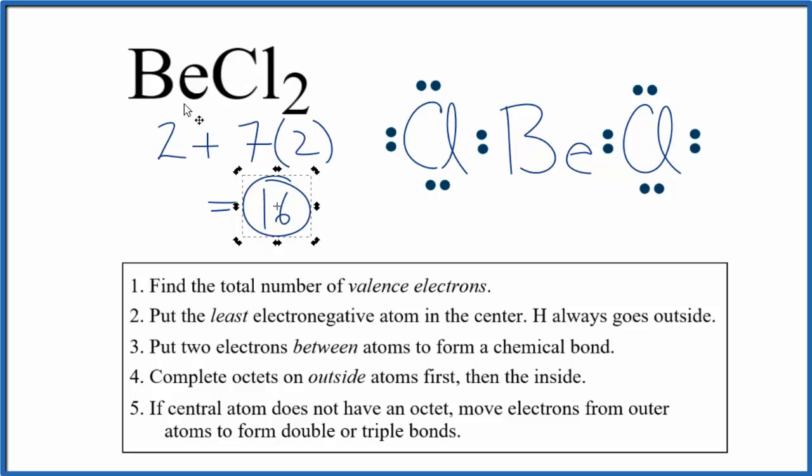That makes this the Lewis structure for BeCl2. If you calculated the formal charges, you'd find that they would be zero on each element. So that supports the idea that this is the best Lewis structure for BeCl2, and that it's okay that we have this incomplete octet. If you wanted to know the molecular geometry, this would be linear. Bond angle would be 180 degrees.